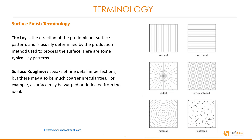Surface roughness speaks of fine detail imperfections, but there may also be much coarser irregularities. For example, a surface may be warped or deflected from the ideal.